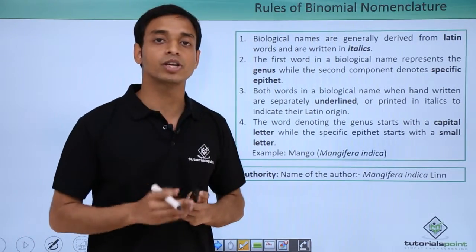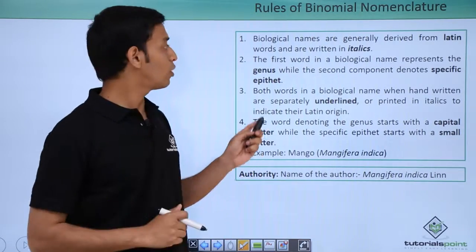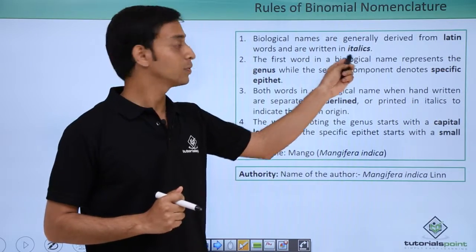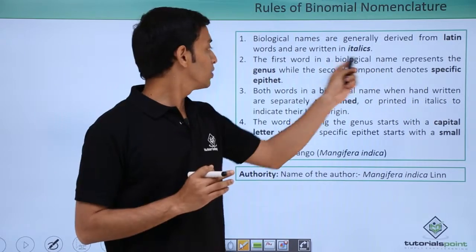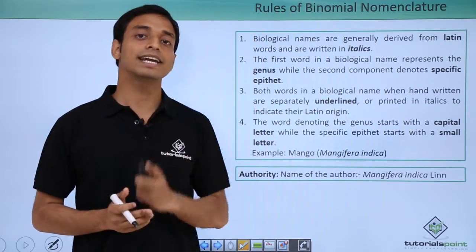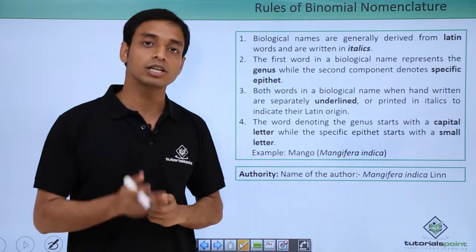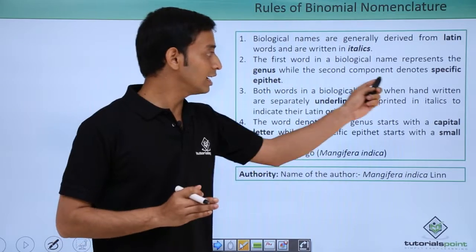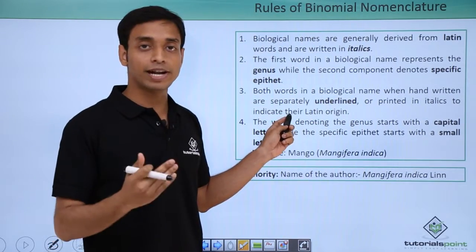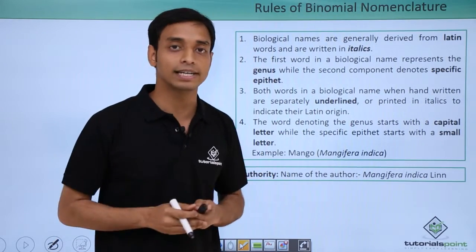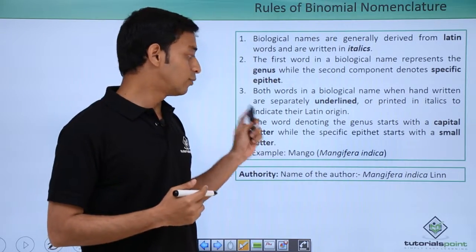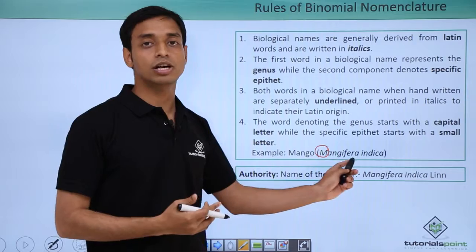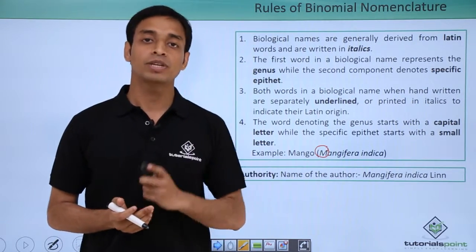There are four main rules for binomial nomenclature. First, biological or scientific names are mostly derived from Latin words and are italicized. Second, the first word represents the genus name and the second represents the specific epithet or species name. Third, when writing on paper, the genus name and specific name must be underlined separately; in printed or computerized material they are italicized. Fourth, the first letter of the genus name must be capitalized, while all other letters in the scientific name are written in small letters.